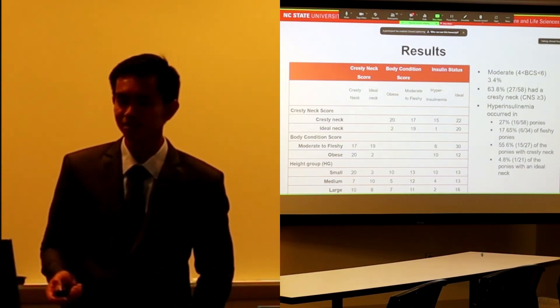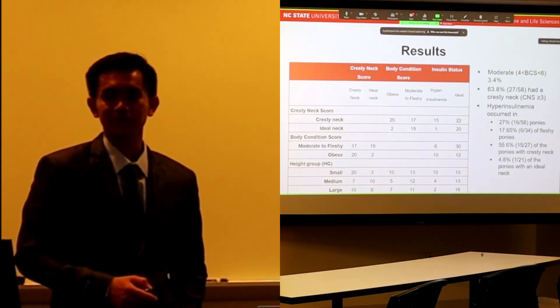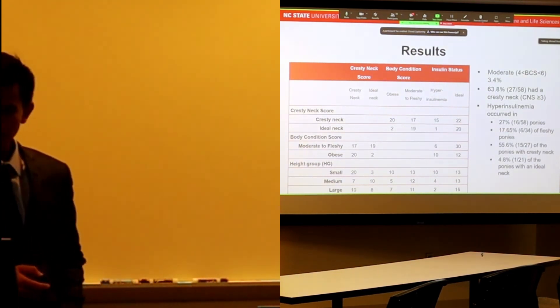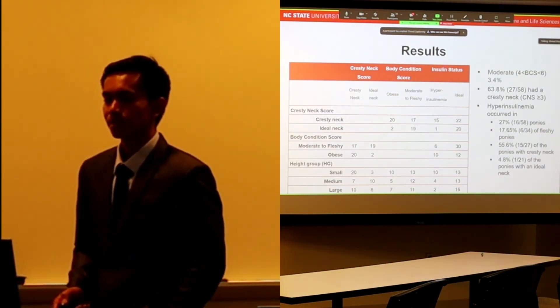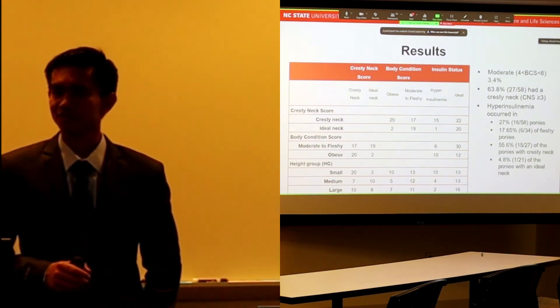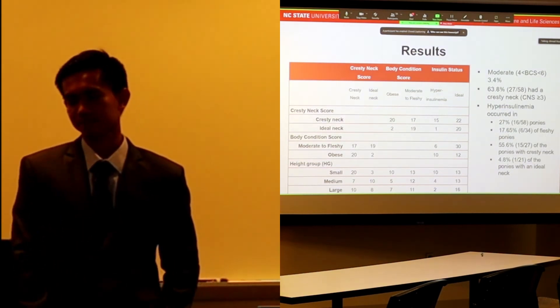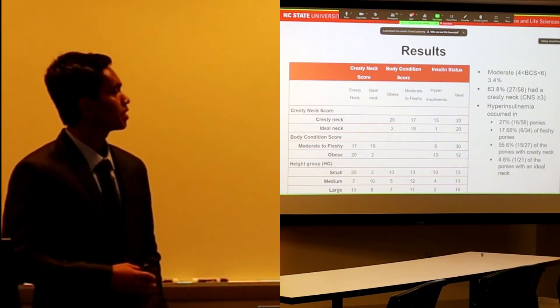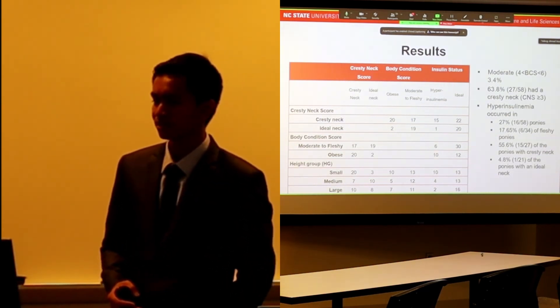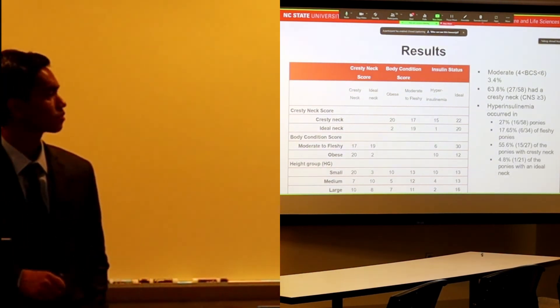Meanwhile, ones with ideal neck, only one hyperinsulinemic versus 20 ideal - a very small proportion. We can see that around 96% of the animals were fat, and 64% had cresty neck. Hyperinsulinemia occurred in almost 30% of total ponies.